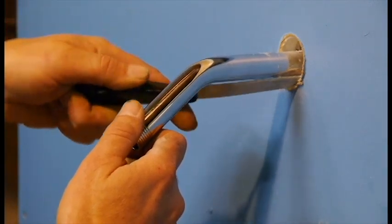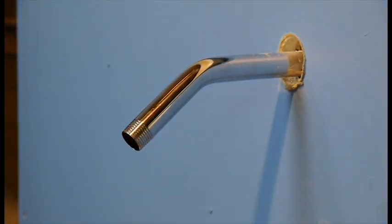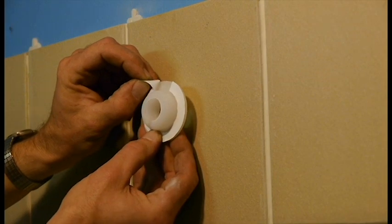Apply adhesive to the back of the flange and slide the clamp back onto the shower arm until the flange contacts the wall. Press firmly.